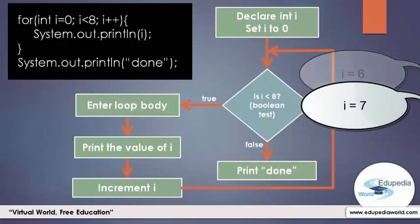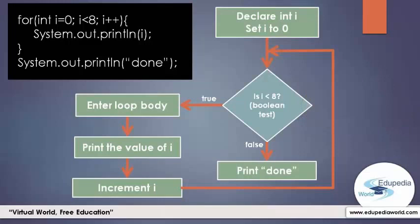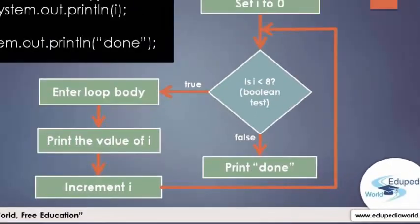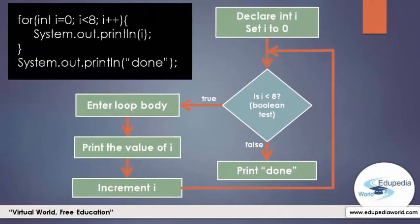At the end of the iteration that prints the value 7, the variable i is incremented to 8. When the condition is checked again, 8 is not less than 8, so we follow the false path — meaning we come outside of the for loop. Now we print 'done'. That's how you write a regular for loop.